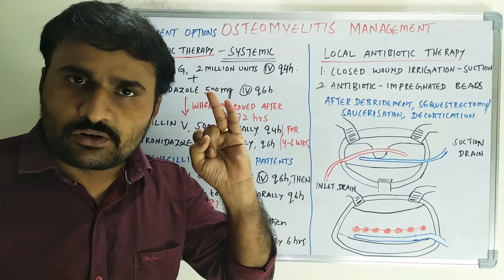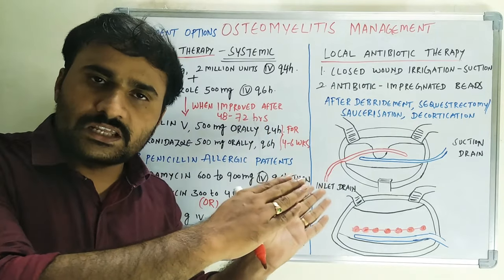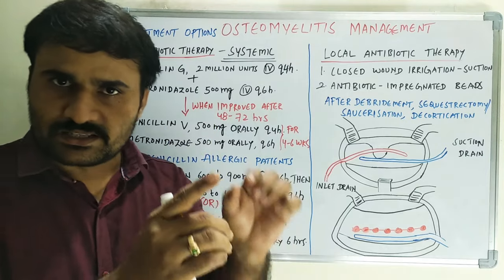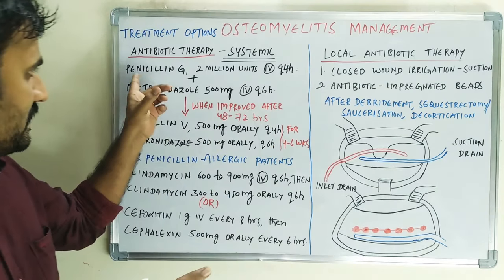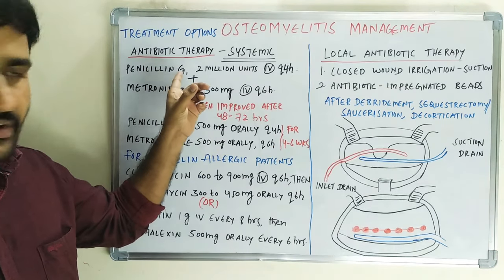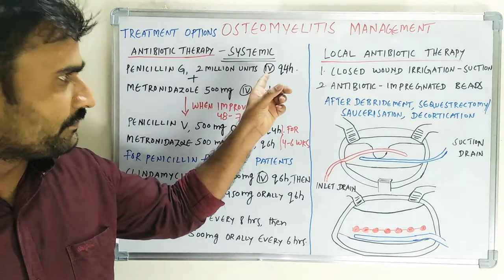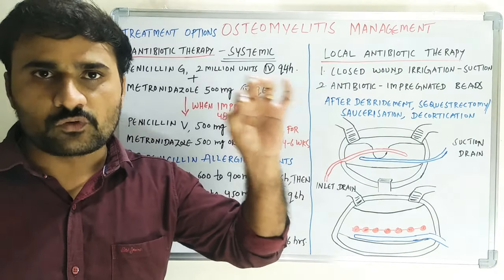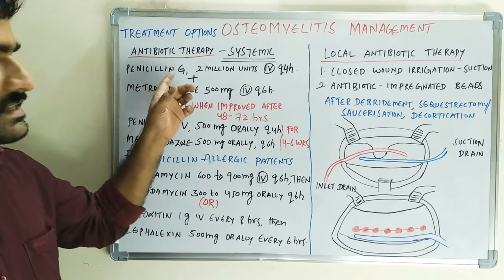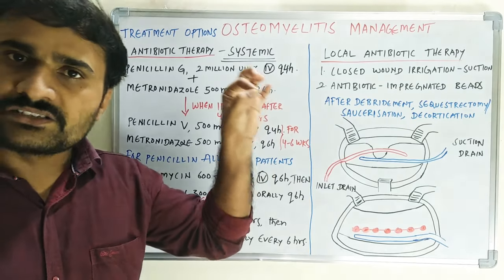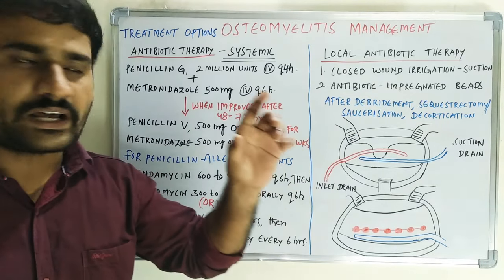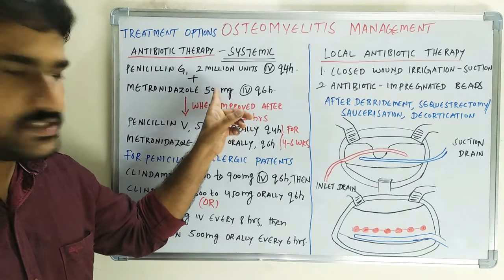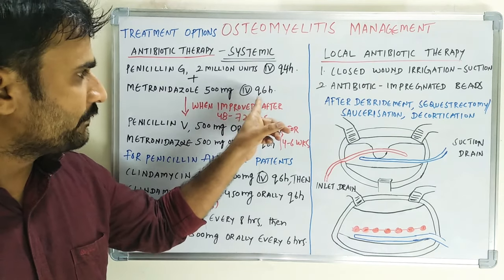Generally, first we will go for intravenous therapy, after which we will shift to oral. Penicillin G is given at 2 million units IV every 4 hours. It is ineffective against anaerobes, which is why we are adding metronidazole 100 mg IV every 6 hours.